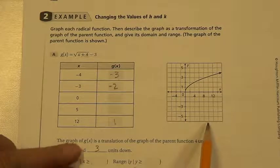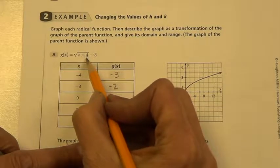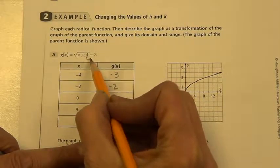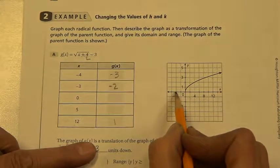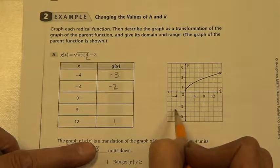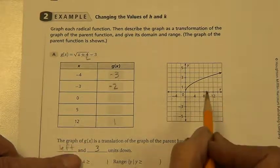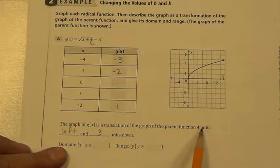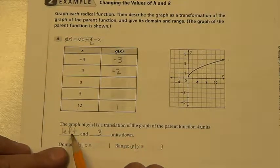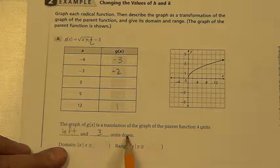This is your h value. h is a negative 4, so it actually moves it to the left 4, down 3, and that's how it should plot. The graph of g of x is a translation of the graph of the parent function, 4 units left and 3 units down.